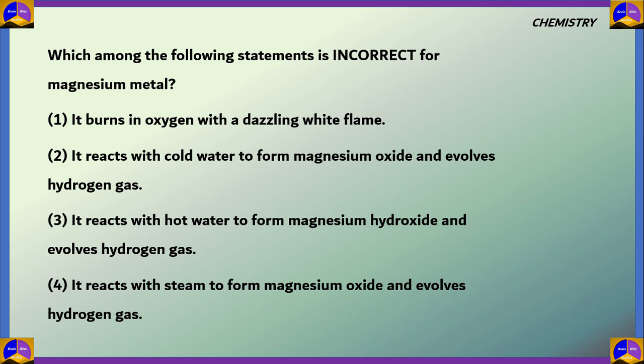Now next question on chemistry. Which among the following statements is incorrect for the metal magnesium? So we have four statements as in the options and we have to find the incorrect one. The first statement says it burns in oxygen with a dazzling white flame. This is a true statement since we have learned a combination reaction, the classic combination reaction of magnesium burning in air to form magnesium oxide white ashes and it would burn with a dazzling white flame which is one of the observations of this reaction. So option one is a true statement, so the option is incorrect.